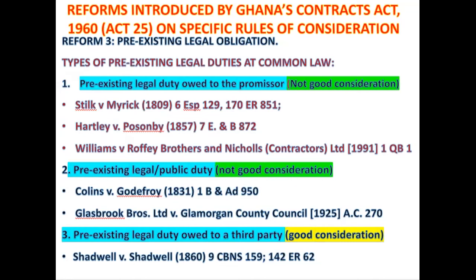Under the common law, the performance of a pre-existing legal duty owed to a third party amounts to a valid form of consideration — it amounts to sufficient consideration to support the enforcement of a promise. This is evidenced in the case of Shadwell v Shadwell, reported as far back as 1860. So under the common law you have seen three kinds of pre-existing legal duties: one owed to the promisor — does not amount to good consideration; a pre-existing legal or public duty — does not amount to good consideration; and one owed to a third party — that one does amount to a valid form of consideration.